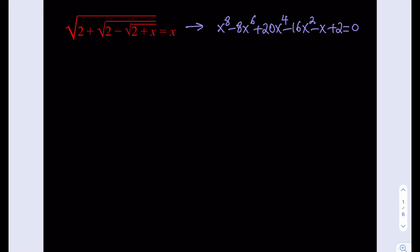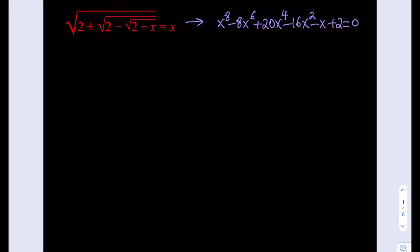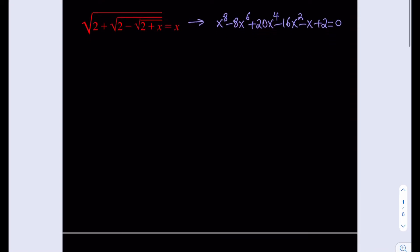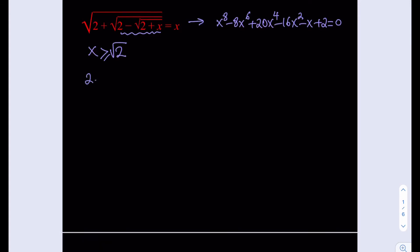We're going to be using a different approach here. Notice that the expression under the radical is actually greater than or equal to the square root of 2, so we can safely say that x is greater than or equal to square root of 2. We also need that the expression under the radical is non-negative, so 2 minus the square root of 2 plus x is greater than or equal to 0.